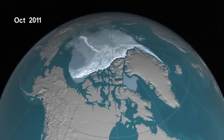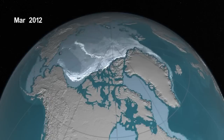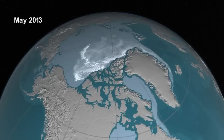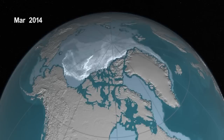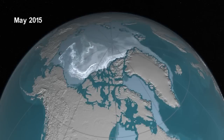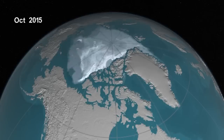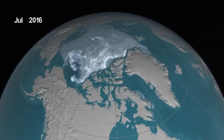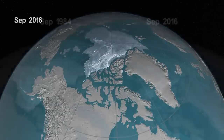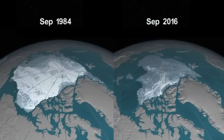So we're seeing the Beaufort Sea go from a nursery to a graveyard for older ice. As we get towards the more recent years, much of that oldest ice — the ice that's older than five years old, shown in bright white — has almost virtually disappeared from the Arctic Ocean, and the Arctic is now dominated by younger and thinner ice.